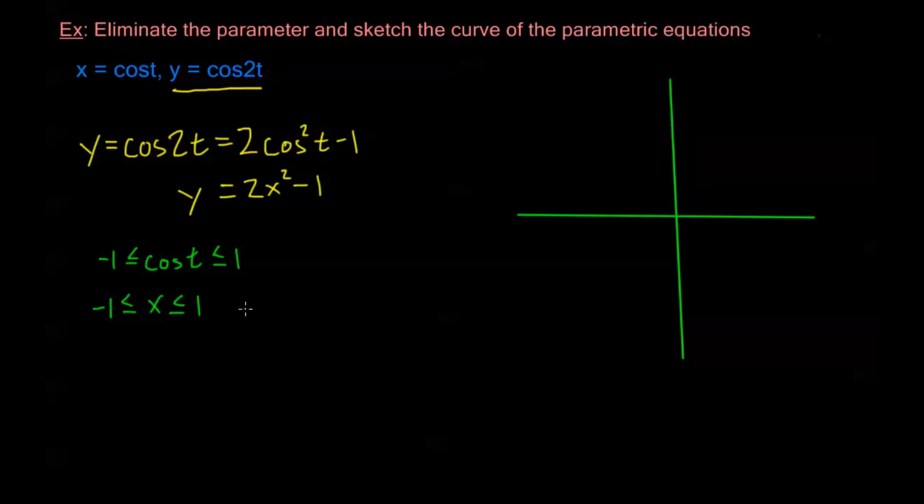So we have to be a little bit careful. I also have this same restriction for y, don't I? I have that y is also going to be between negative 1 and 1, because y is cosine of 2t, and cosine of 2t still needs to be between negative 1 and 1. So I'm only going to be looking at a portion of this axis between negative 1 and 1 for all of my x and y values.